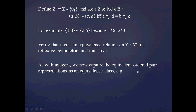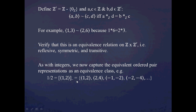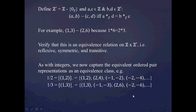We capture the equivalent ordered pair representations as equivalence classes. For example, the rational number 1/2 equals the equivalence class of (1, 2) modulo tilde, which includes ordered pairs like (1, 2), (2, 4), and also the negations: (−1, −2), (−2, −4), and so on. As another example, 1/3 has representatives like (1, 3), (−1, −3), (2, 6), (−2, 6), (−2, −6), and so on.